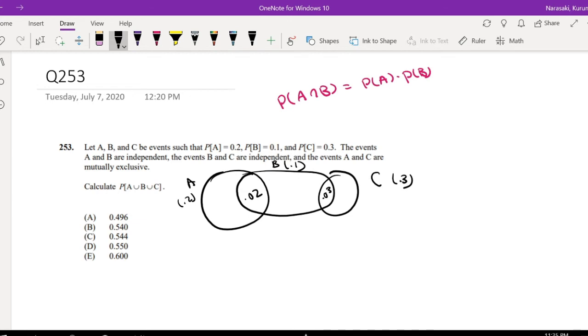Okay, so if 0.02 and 0.03 are in here, then just this part, just the B part without any intersection, is going to be 0.05. And then we know the outside is going to be 0.27, and then just the A part without the intersection is 0.18.